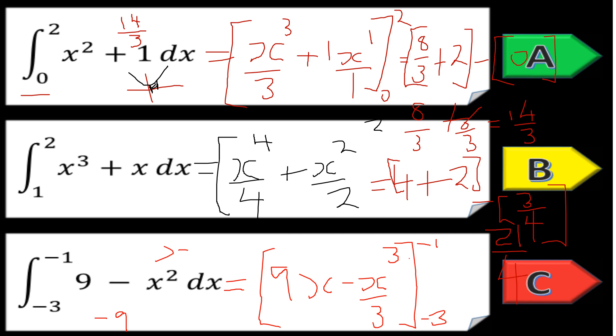Plug in minus one: we're gonna have minus nine, then we got minus minus one cubed over three. If x is minus one, then minus x is positive one cubed over three, so minus nine plus one third.